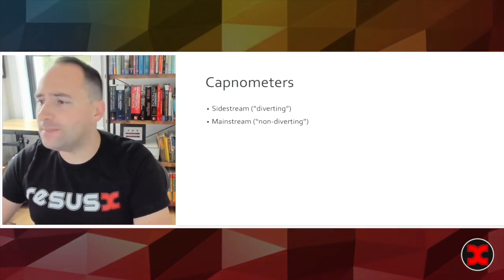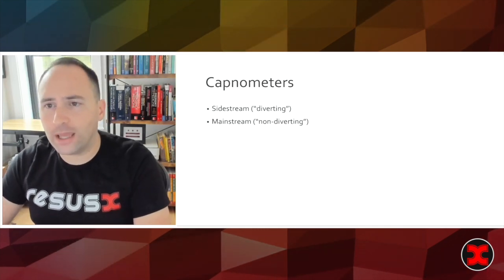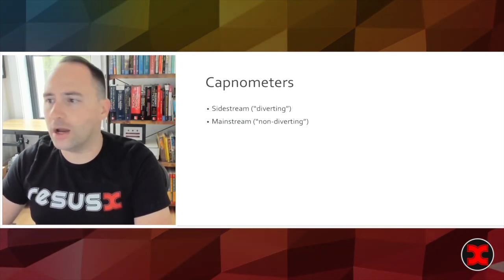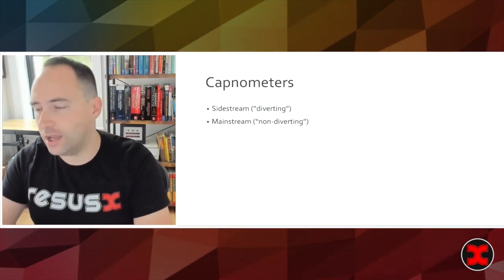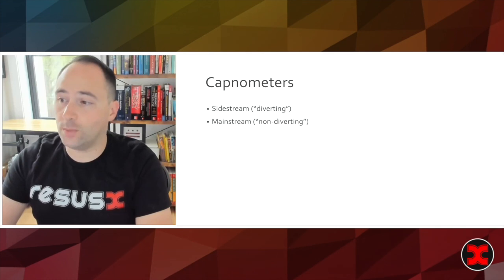So what types of capnometers exist? Well there are two in mainstream use. There is the sidestream or what you'll hear called diverting capno or mainstream which is non-diverting.